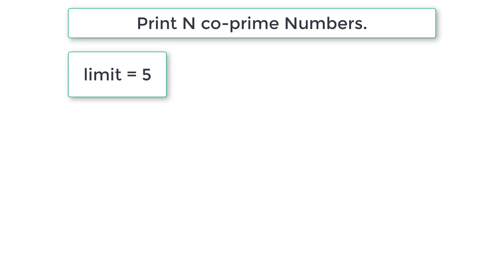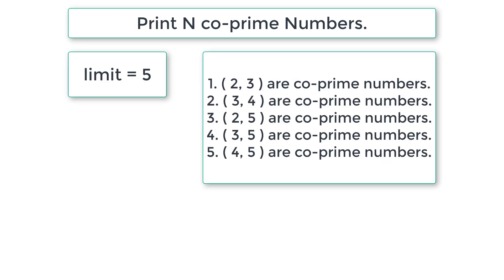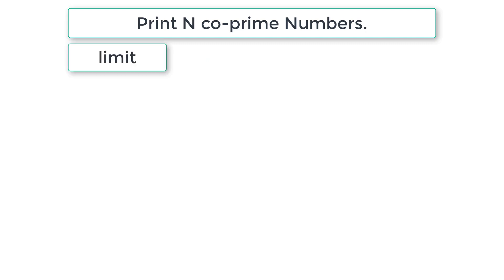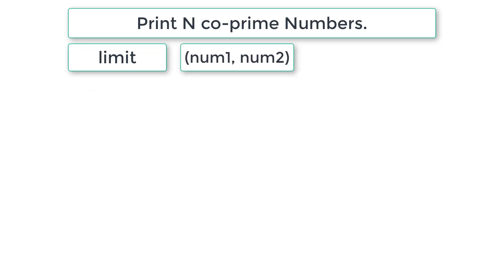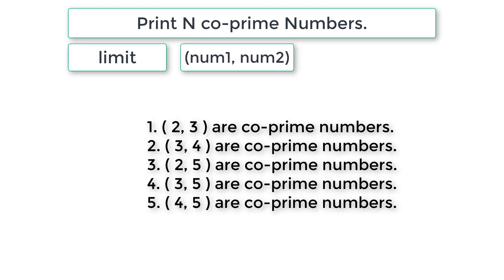With that definition, if the user enters limit equal to 5, we need to output the result. I'll write a while loop to cover the limit logic: while(limit), inside the loop I'll decrement limit by 1. Once limit reaches 0, the while loop exits. This is the limit logic, and next we need a for loop to fetch num1 and num2.